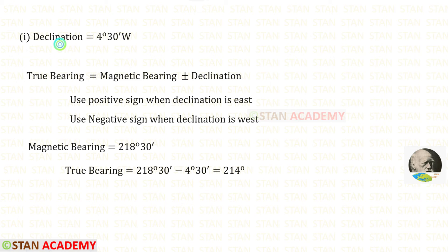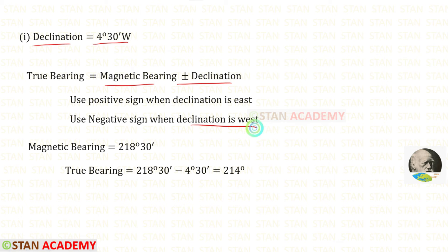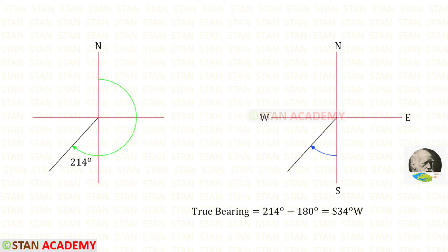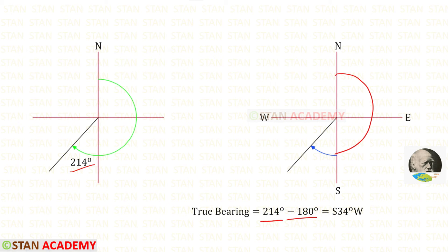First, let us take the declination 4 degrees 30 minutes west. We know the formula to find the true bearing: magnetic bearing plus or minus declination. Here the declination is west, so we use the negative sign. 218 degrees 30 minutes minus 4 degrees 30 minutes gives us 214 degrees. Then we convert the whole circle bearing into reduced bearing by subtracting 180 degrees, and we get south 34 degrees west.